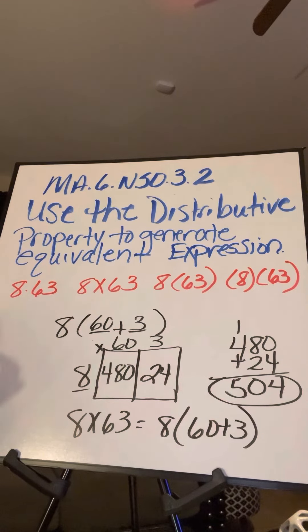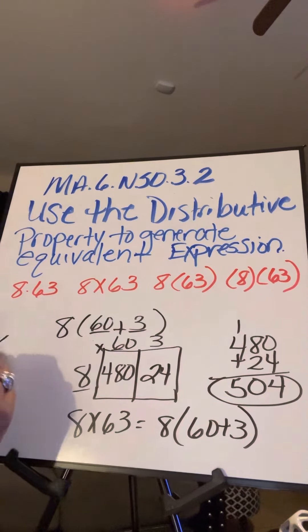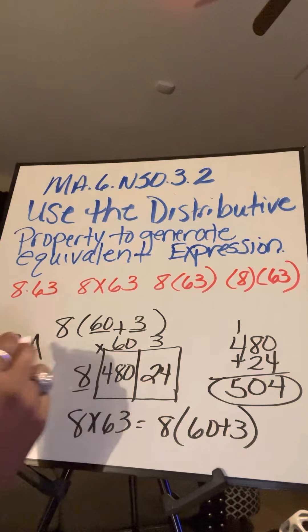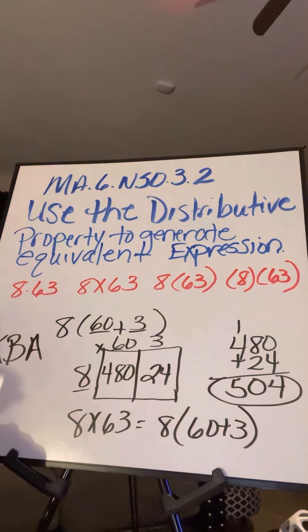So remember when we see the multiplication for the distributive property, we do what I call KBA. We keep the single digit, break apart the second digit.